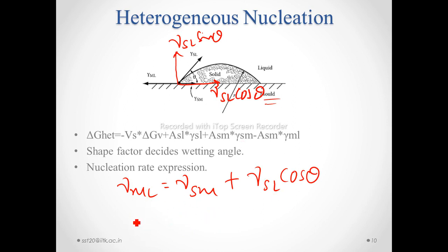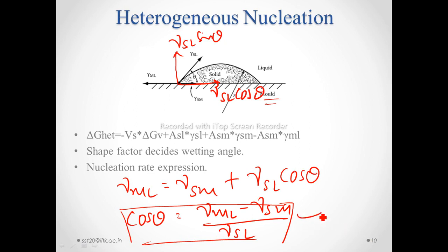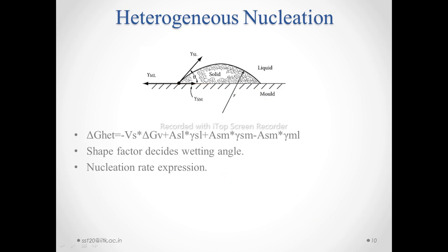From here, rearranging the terms, cos theta will give rise to gamma_ml minus gamma_sm, divided by gamma_sl. This equation gives the optimum embryo shape on the condition that the mold wall remains planar. So cos theta equals gamma_ml minus gamma_sm divided by gamma_sl.